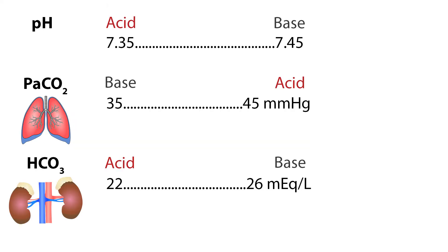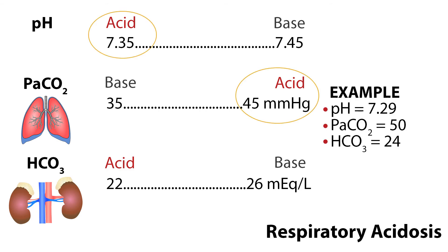When you need to interpret ABGs, it is helpful to lay out a chart with pH at the top of the first column, then lungs and kidneys. Start labeling in the second column: acid, base, acid, continuing on to the third column: base, acid, base. And if you've memorized the normal values, you can plug them right in. pH is 7.35 to 7.45, PaCO2 is 35 to 45, and HCO3 is 22 to 26. With a chart written out, you can easily figure out ABG problems.